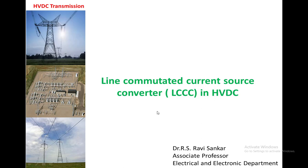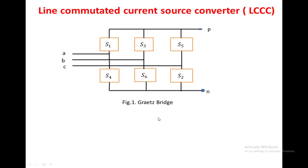In this lecture we are going to discuss about the line commutated current source converter HVDC system. This is the circuit diagram with valves S1, S3, S5, S2, S4, and S6. The numbering for the valves is given in the sequence in which we are turning on the devices. A phase, B phase, and C phase is the connected three-phase supply. By turning on and off the devices, the AC voltage will be converted to DC voltage. In the line commutated current source converter, each valve is a SCR.